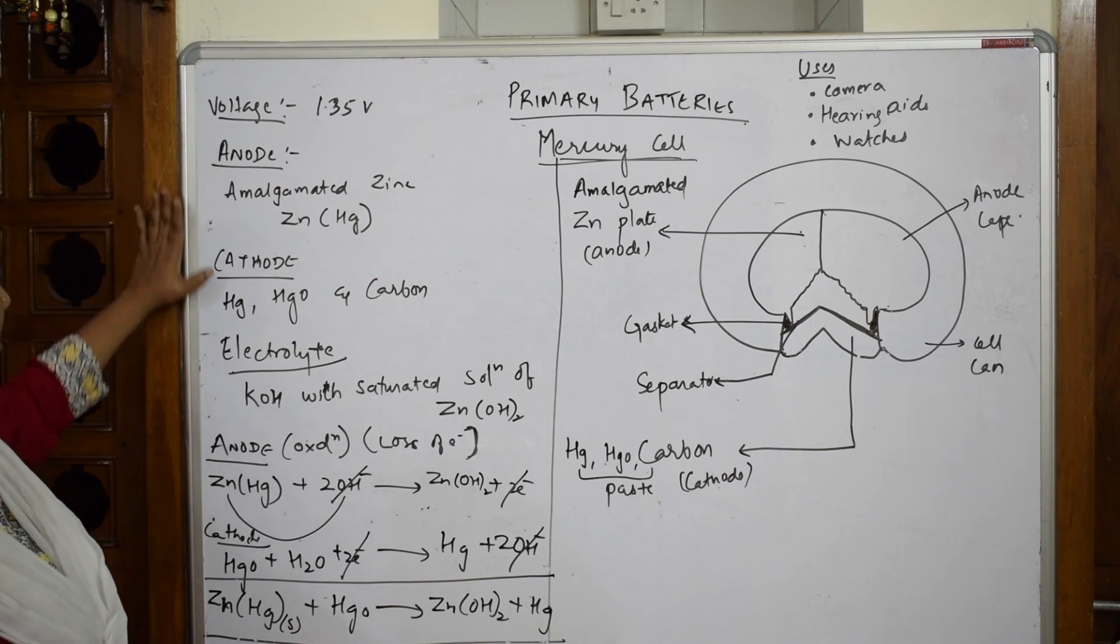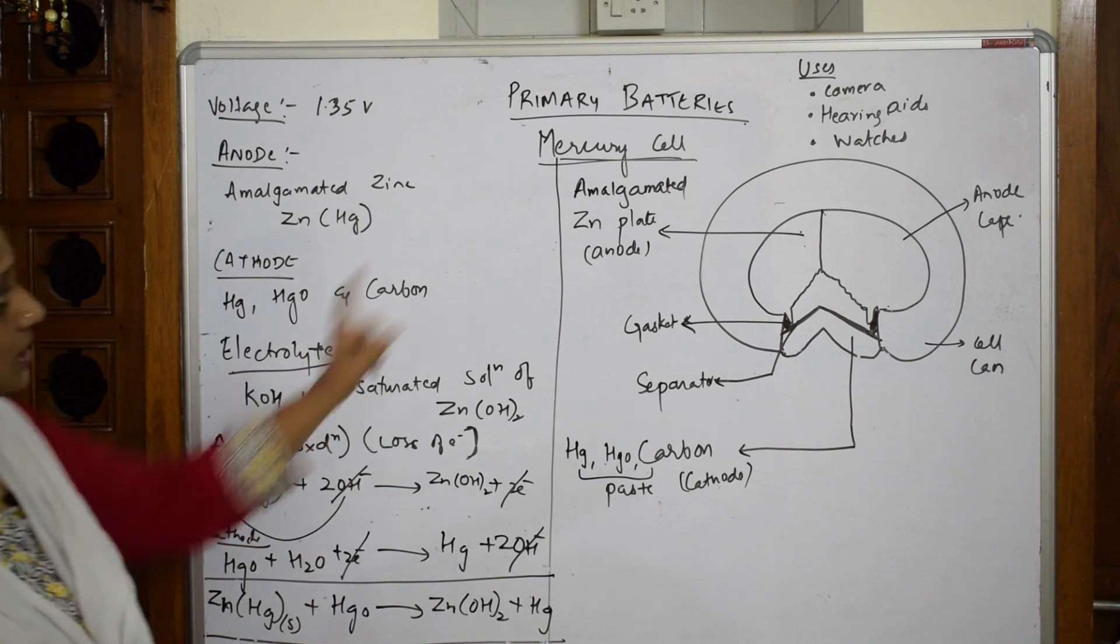Write the cathode, anode, voltage, cathodic reaction, electrolyte, anodic half cell reaction, cathodic, overall reaction, and uses.